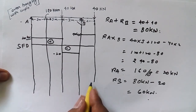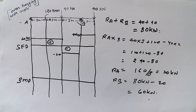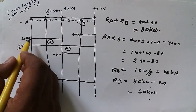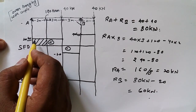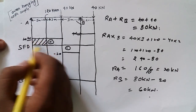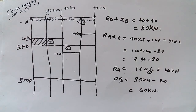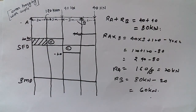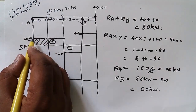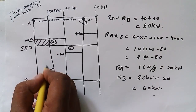Now I'm going to draw the bending moment diagram (BMD). We start from the left. The first section forms a rectangle — to find the area we multiply length by width: 2 into 20 equals 40. Since the shear force diagram shows a constant straight line here, the BMD will be a linear line up to 40 kilonewton-meters.